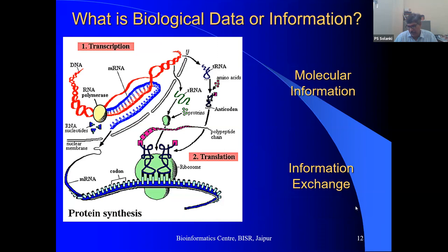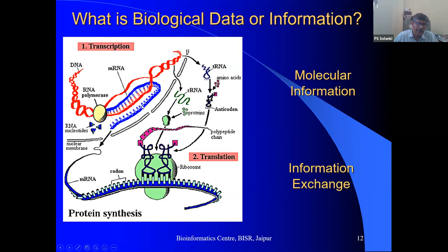Now let's discuss databases — what databases are and how we store biological data inside computers. First, let's understand what biological data is. This is the central dogma of molecular biology: transcription and translation. DNA expresses to make RNA, and RNA travels from the nucleus to the cytoplasm, attaches with ribosomes, and is translated to produce protein molecules.